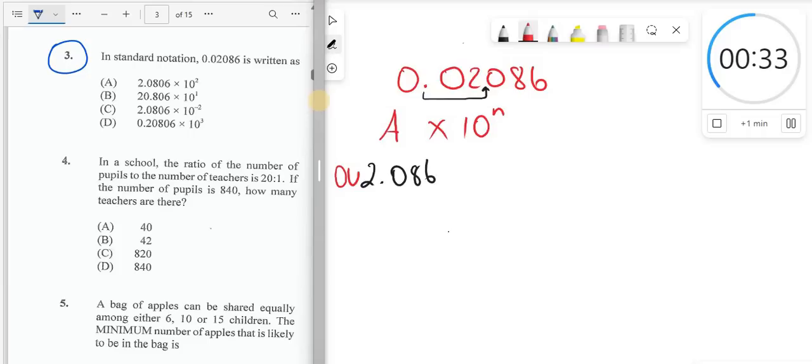You might ask, what happened to the zeros? Well, if we put the point after the two, and we have zeros at the beginning, those would be useless. It still would be 2.086. So that's a number between 1 and 10. So now it's written as a. So right away, we realize we can cancel off what? B can cancel off D as well.